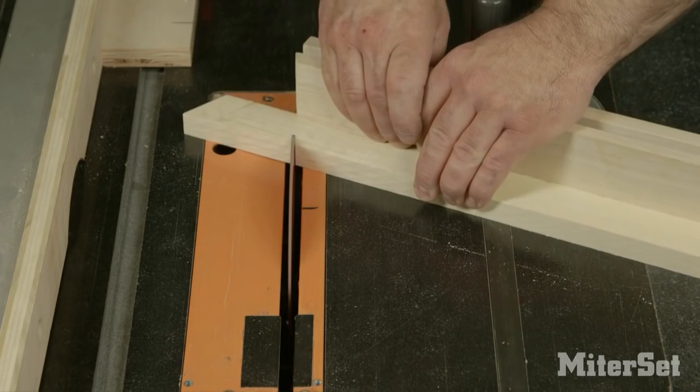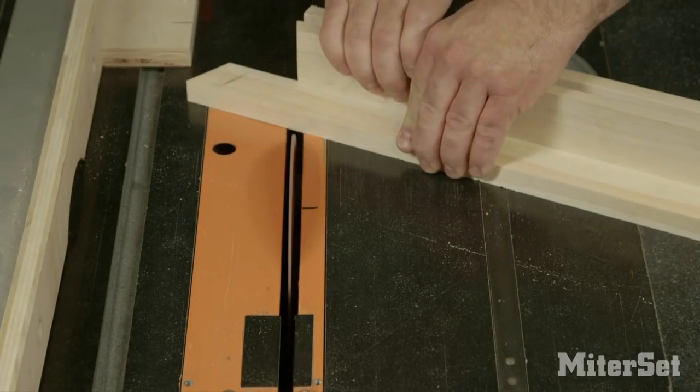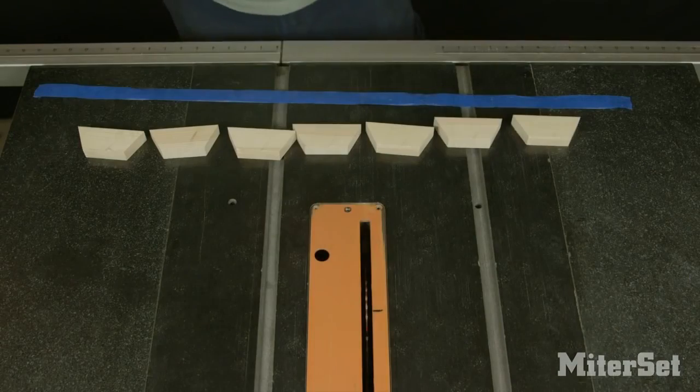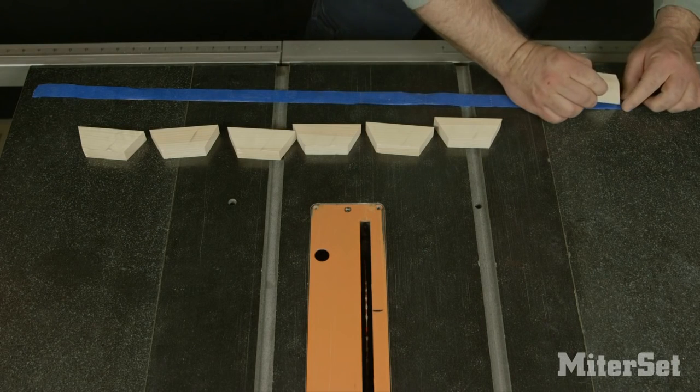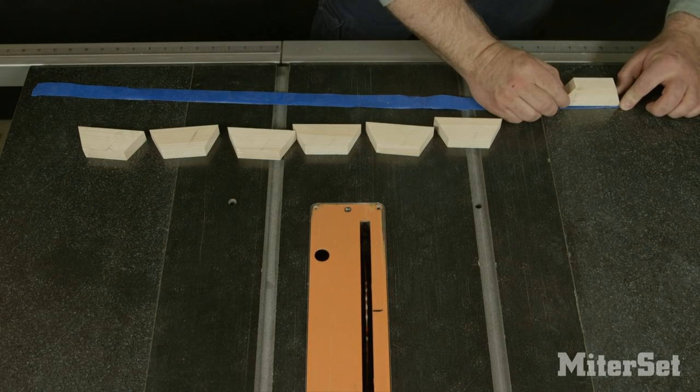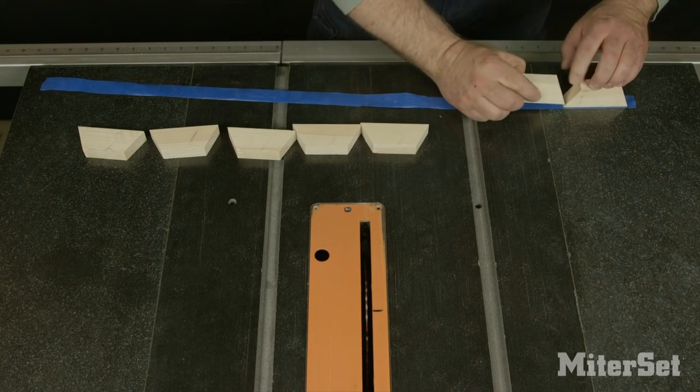I've added a fence extension to my miter gauge so I can have better control while making my cuts. Once I get all seven segments cut I'm going to place the segments joint to joint on a piece of masking tape. Masking tape is a great way to keep even the smallest segments in place during layout.